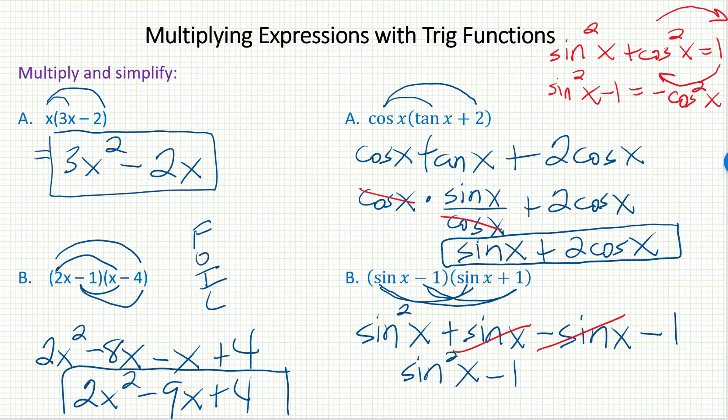So sine squared x minus 1, going back to our problem, is equal to negative cosine squared x. And so here would be the shortest, simplest way to write the final answer.